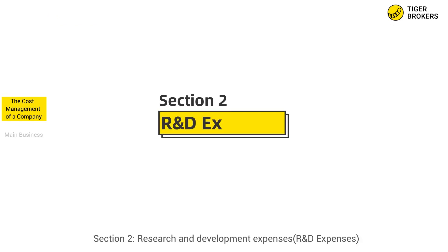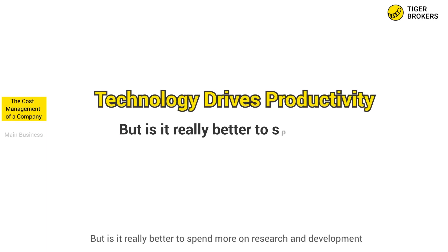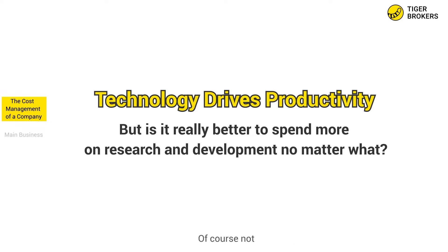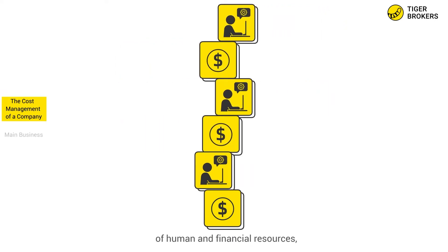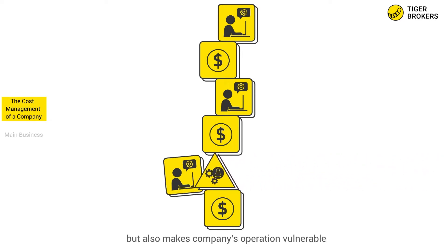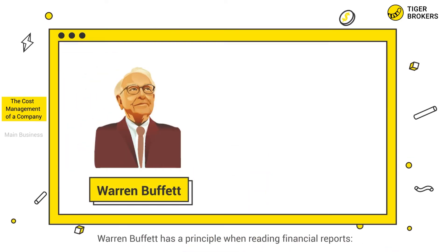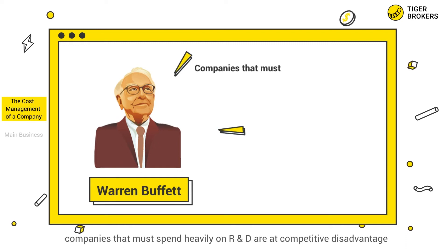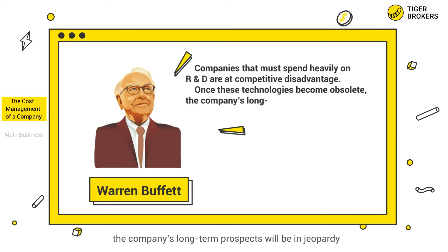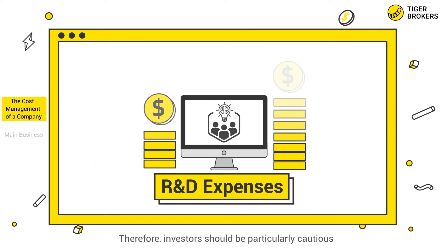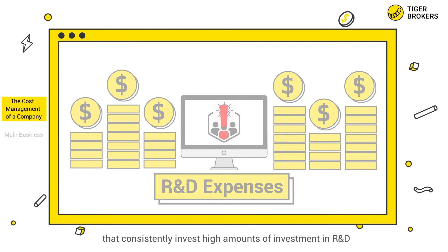Section 2: Research and Development Expenses. We all know that technology drives productivity, but is it really better to spend more on R&D no matter what? Of course not. Technology is changing rapidly nowadays. Expensive R&D expenses not only consume a lot of human and financial resources, but also make a company's operations vulnerable once its research is disrupted by other disruptive technologies. Warren Buffett has a principle: companies that must spend heavily on R&D are at a competitive disadvantage. Once these technologies become obsolete, the company's long-term prospects will be in jeopardy. Therefore, investors should be particularly cautious when investing in companies that consistently invest high amounts in R&D.